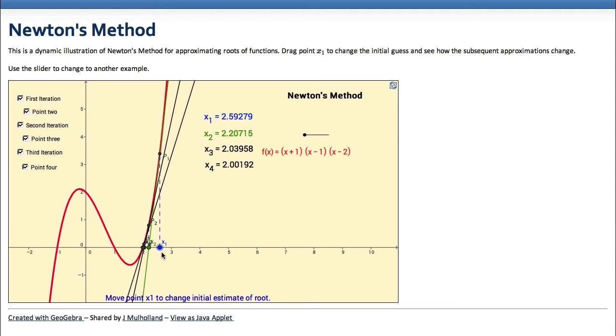What if I took my initial guess to be on the other side of the root? Well it looks like we're still getting approximations that are heading towards 2.